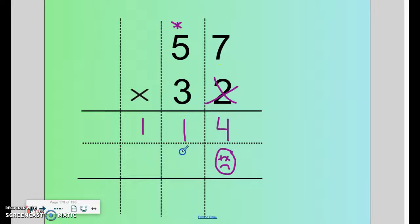3 times 7 is 21. So I put my 1 here, carry the 2. It was important that I killed the 1 before so I don't get it confused in this next step. 3 times 5 is 15 plus 2 is 17.